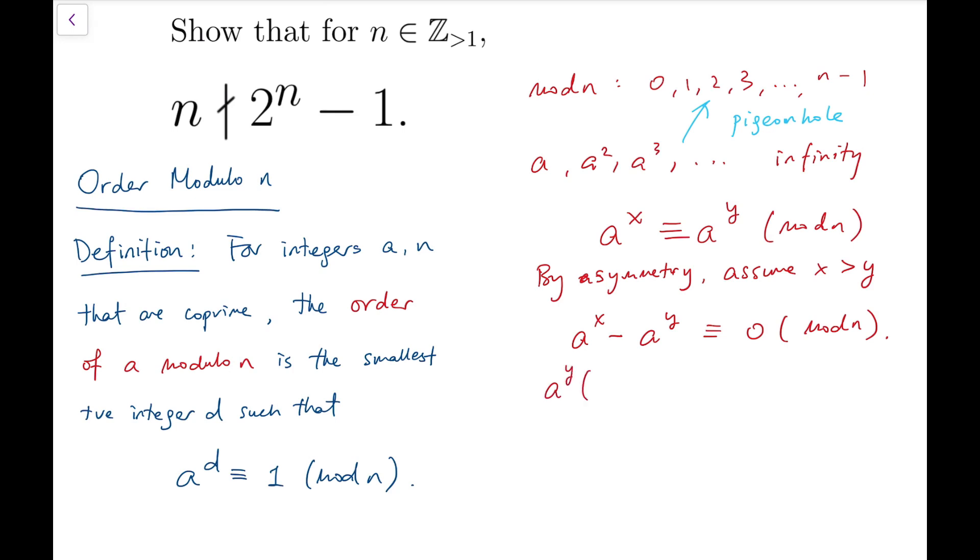And then we can take common factor a to the power y, and then what remains inside the bracket will be a to the power x minus y minus one, and that's congruent to zero mod n.